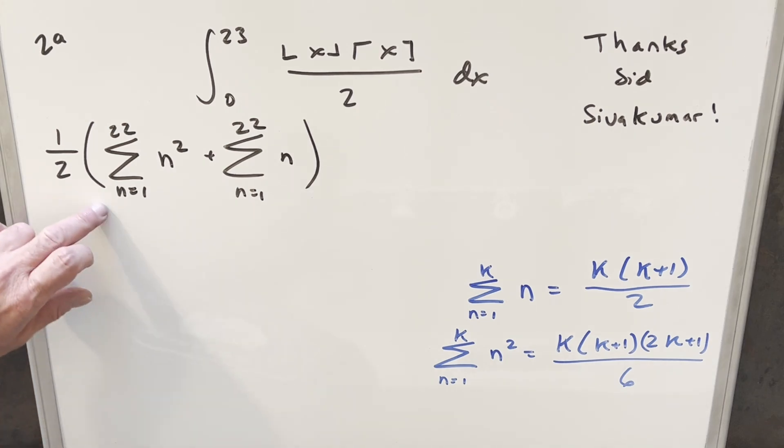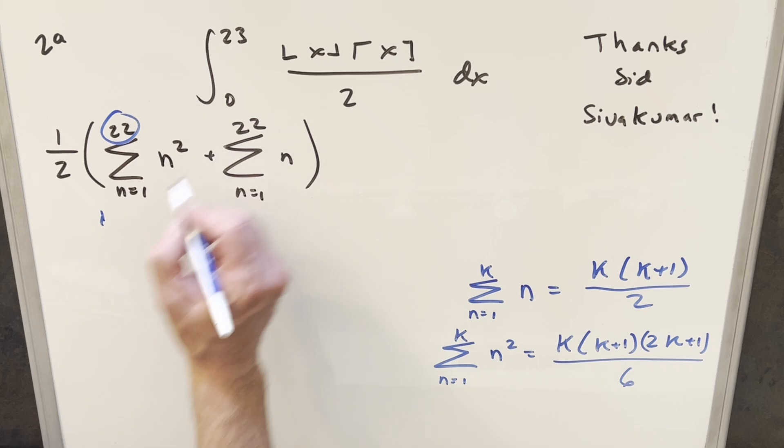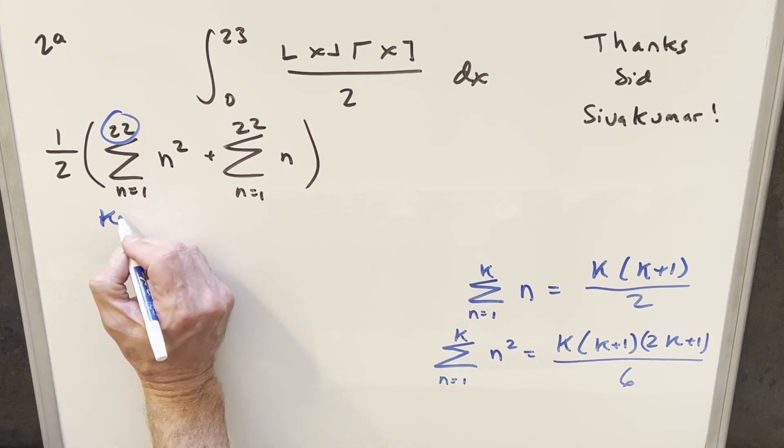But now we have formulas for each of these two sums over here to the right. Let's just start with the first one. We're using the sum for our upper limit k. Like here, this k value is going to be just 22. It's going to be the same over here, but we're going to have k equal to 22.